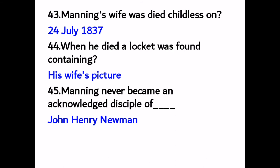Number forty-three: Manning's wife died childless on 24th July 1837. Number forty-four: when he died, a locket was found containing his wife's picture.